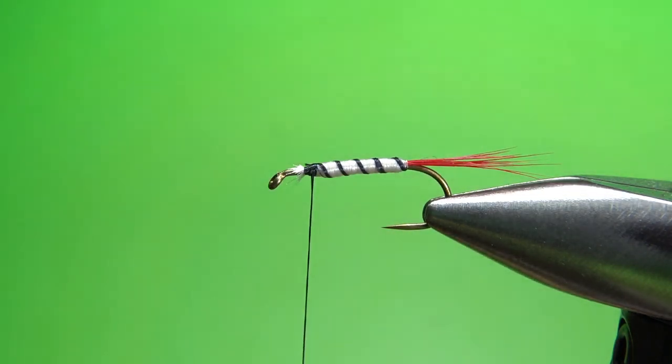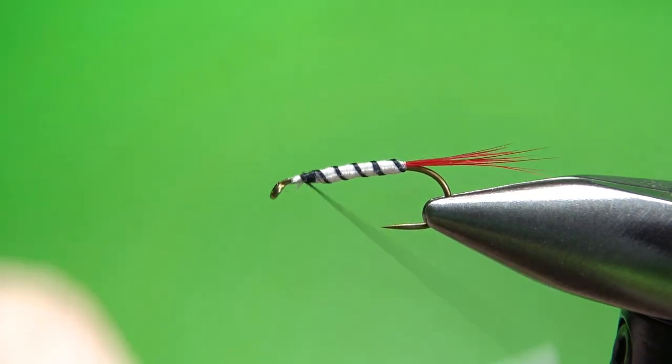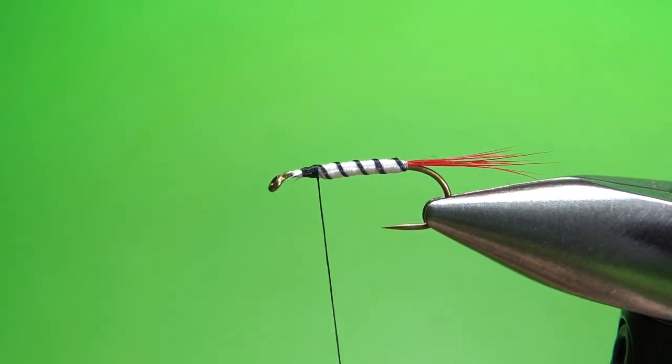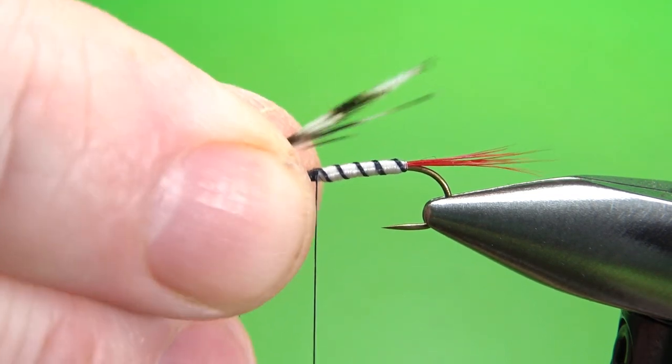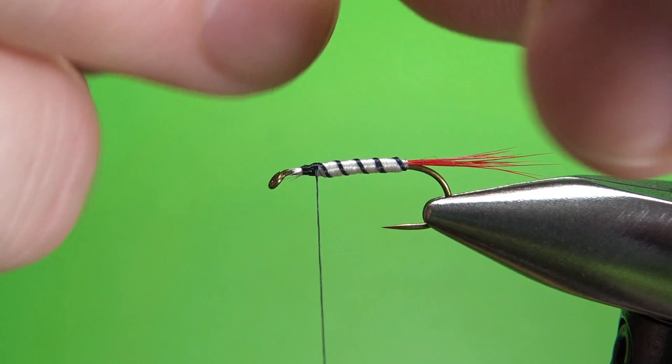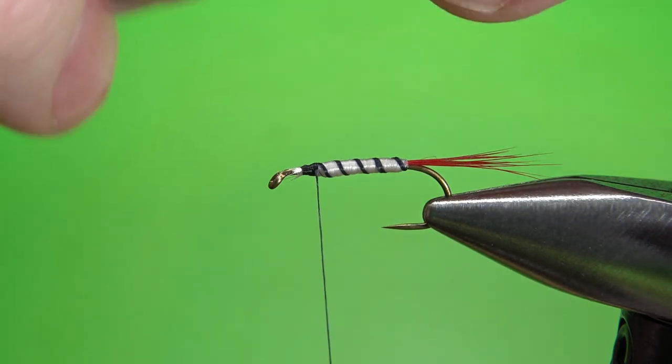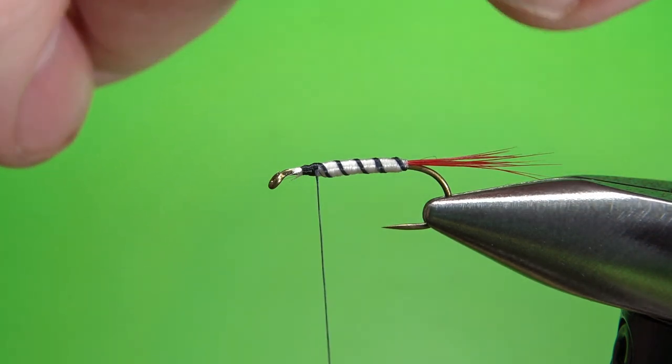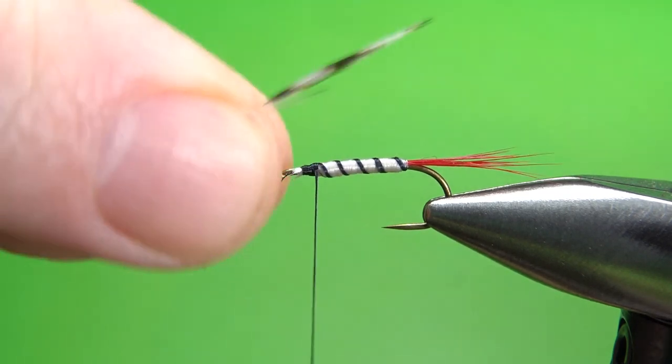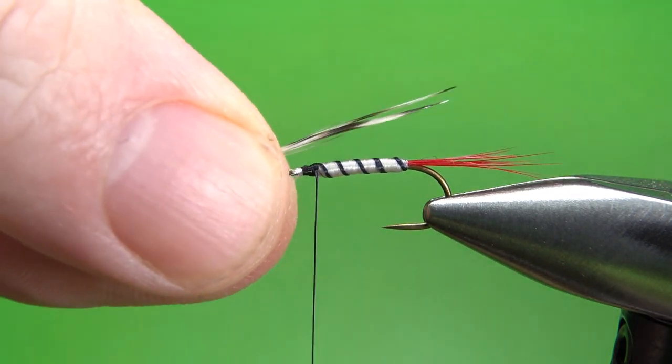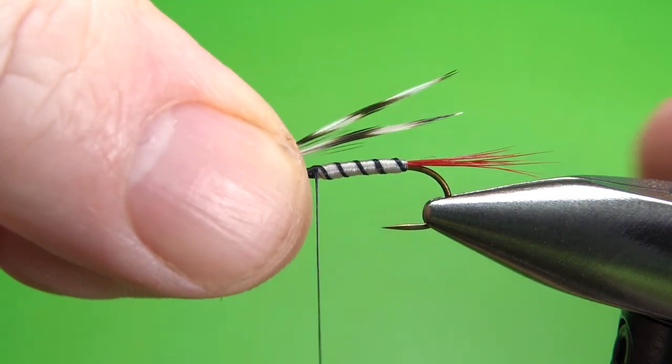Snip this excess. Now take some grizzly hackle tips. I'm using the same dry fly hackle I'm using for the hackle. Just a couple of small tips. It doesn't really matter how you lay them on here. I kind of like them where they might splay out a little bit, but if you don't get that, I wouldn't worry too much about it. Catch them in about a length of the body.